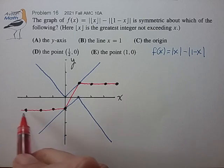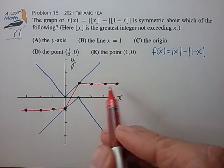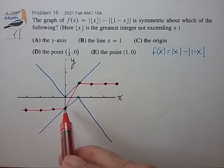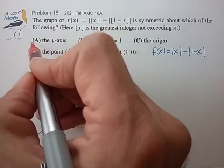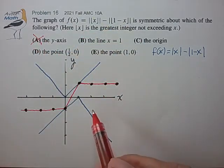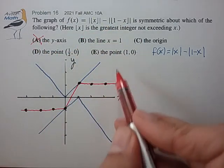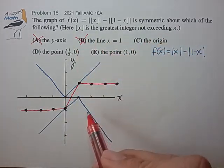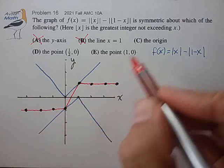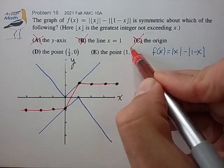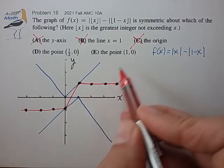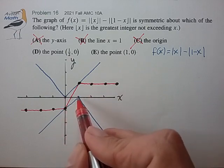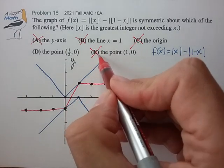So just looking at these integer points that we know are accurate, we know that that does not satisfy symmetry about the y-axis. So we know A cannot be the correct answer. It doesn't satisfy symmetry about the line x equals 1, so that can't be the correct answer. It's not symmetric about the origin, so that can't be the correct answer. And it doesn't satisfy symmetry about the point (1, 0), so that can't be the correct answer.